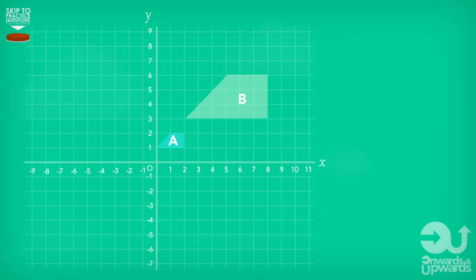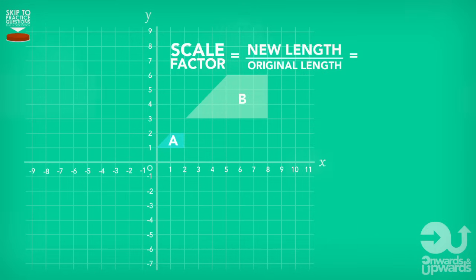What if we wanted to find out what our scale factor was? In a question where we weren't given the scale factor and we were asked to find it, all we need to do is divide one of the new lengths by the corresponding length on our original shape. So, in this example, it would be six divided by two. That would give us a scale factor of three. So, remember our scale factor is a new length divided by the corresponding original length.